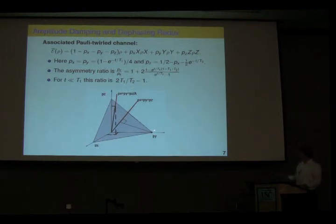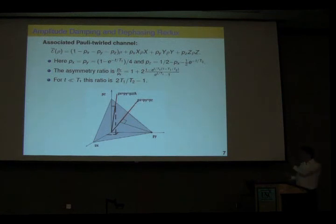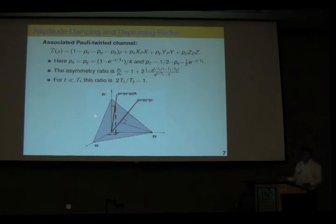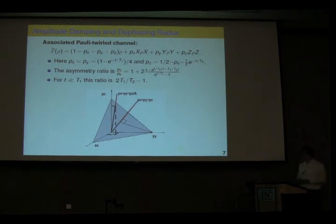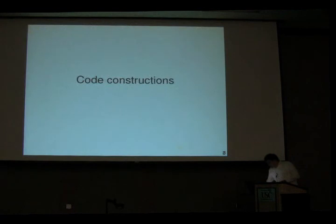If you think of a parameter space where you plot the probabilities for X, Y, Z errors, the depolarizing channel sits at the center of mass of the triangle, while an asymmetric channel will have a very strong bias towards one axis — in our case, towards the Z axis. For this kind of channel we have a much, much higher probability to have a Z error. So next: code constructions — how can we come up with a code which matches an imbalance like that?